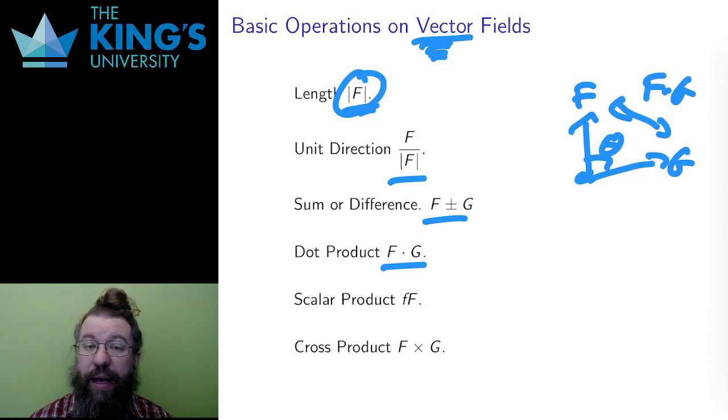If lowercase f is a scalar field, then the output of lowercase f is a scalar, and uppercase F is a vector field at all points in the domain. Therefore, I can do scalar multiplication. Multiply the output of little f by the vector large F everywhere.